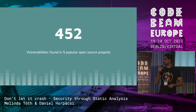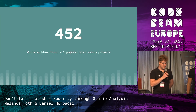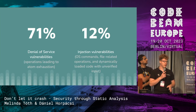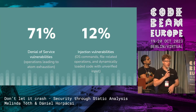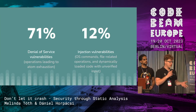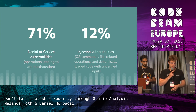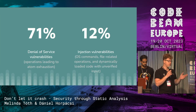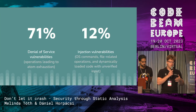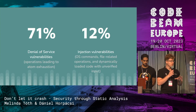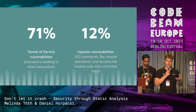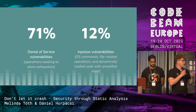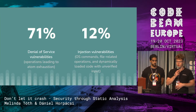Out of these categories, 71% is the leading category, which is denial of service. These operations mainly lead to atom exhaustion, which can cause your system and node to crash. The second biggest category is injection vulnerabilities at 12%. In this category you can find OS commands and file-related operations — these occur when you have unverified input. Also, when you load your code dynamically into your system, this can lead to injection vulnerabilities if you load some kind of malicious code.